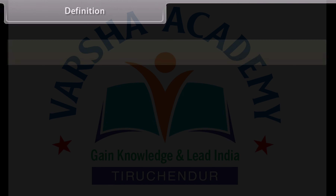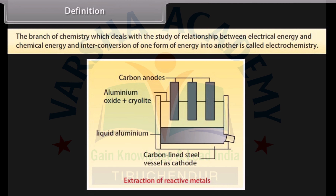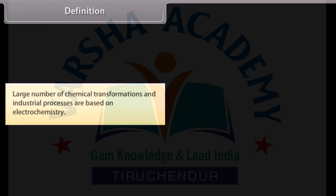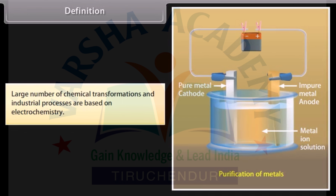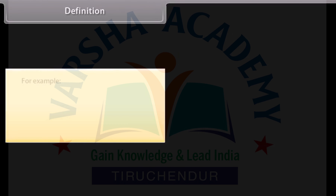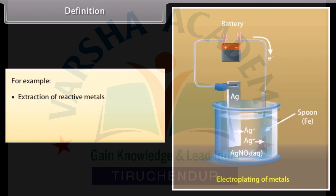Definition: The branch of chemistry which deals with the study of the relationship between electrical energy and chemical energy, and the interconversion of one form of energy into another, is called electrochemistry. A large number of chemical transformations and industrial processes are based on electrochemistry — for example, extraction of reactive metals, purification of metals, and electroplating of metals.